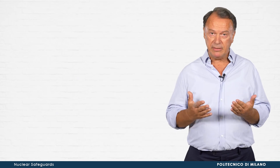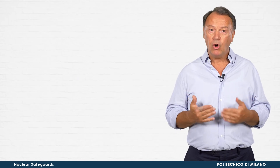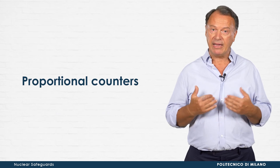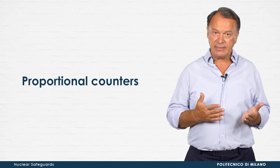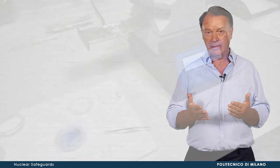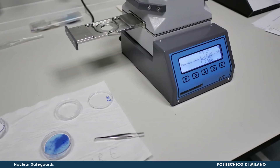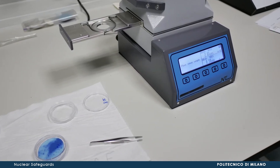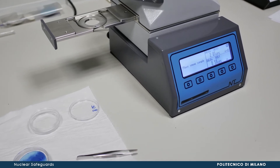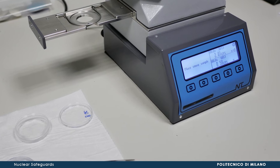Beta emitters can also be measured by proportional counters by evaporating the sample solution on a sample holder. However, unlike liquid scintillation counting, proportional counters suffer more severely from self-absorption issues.